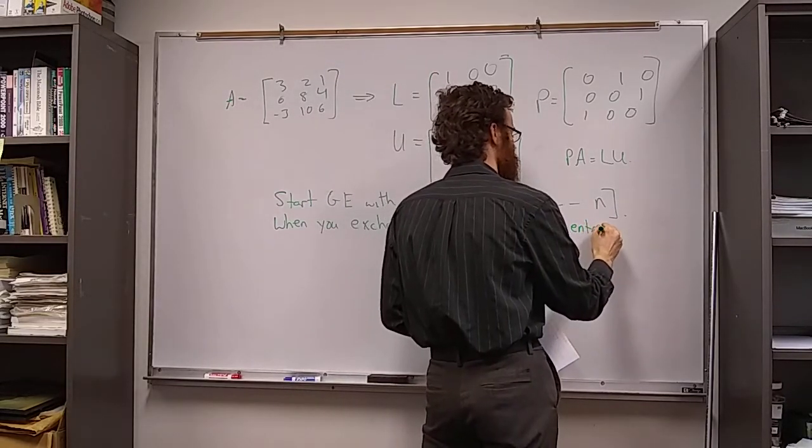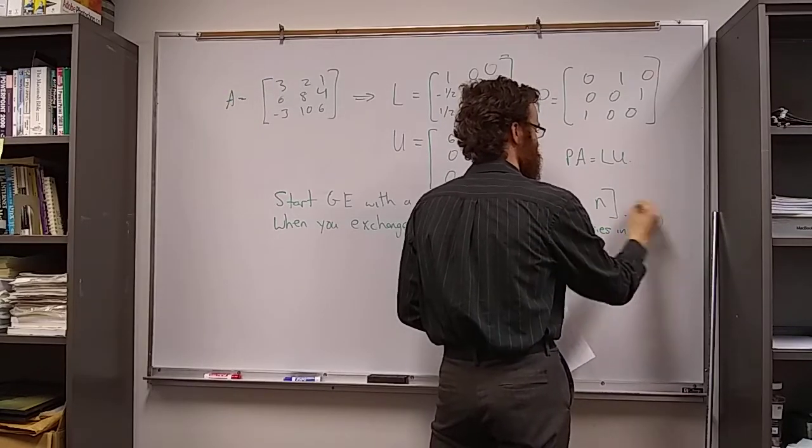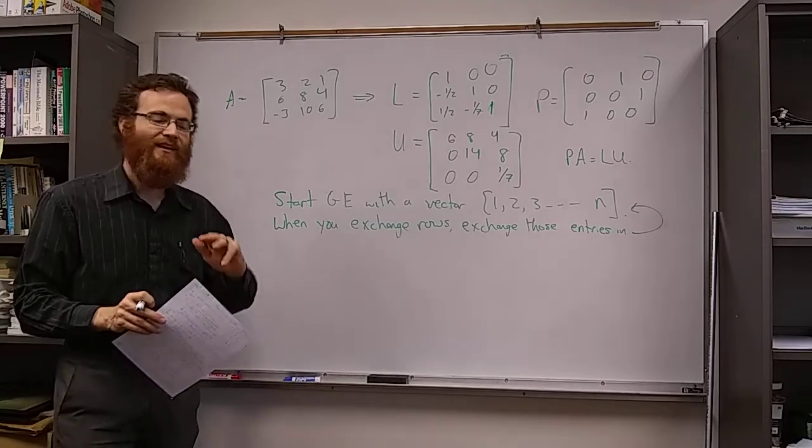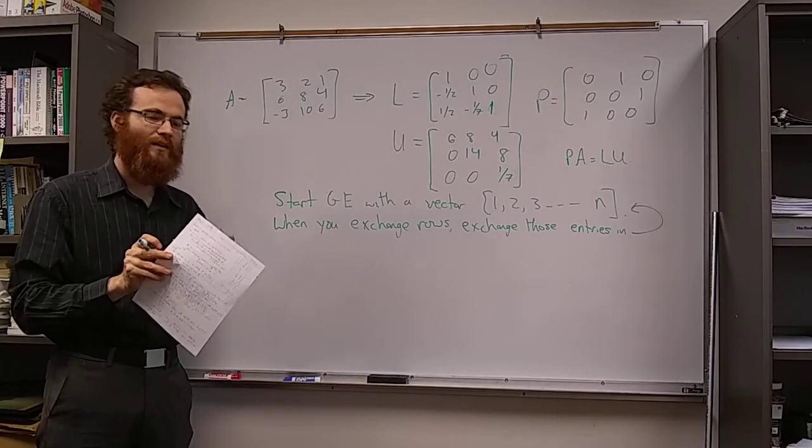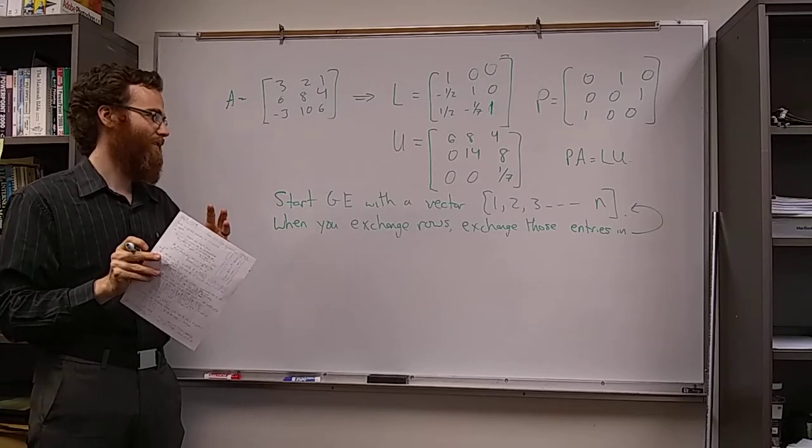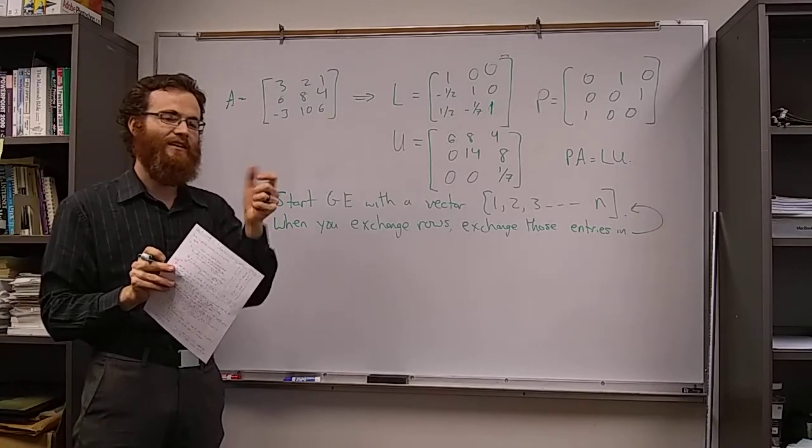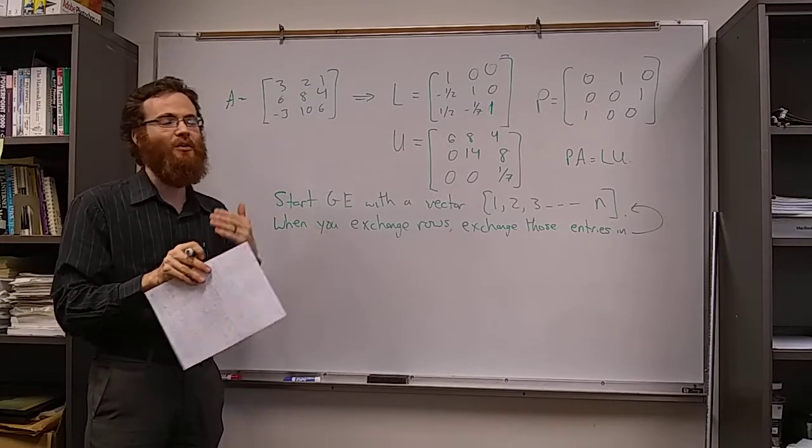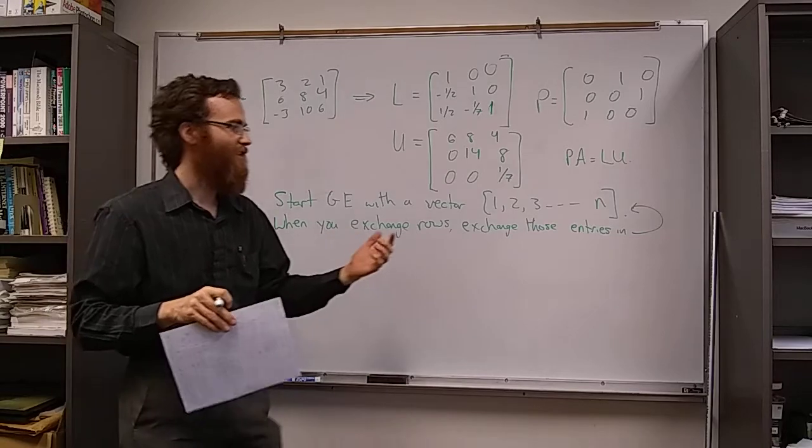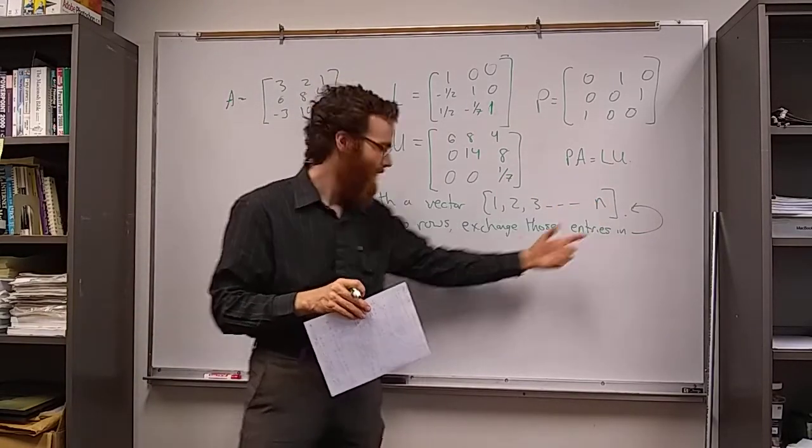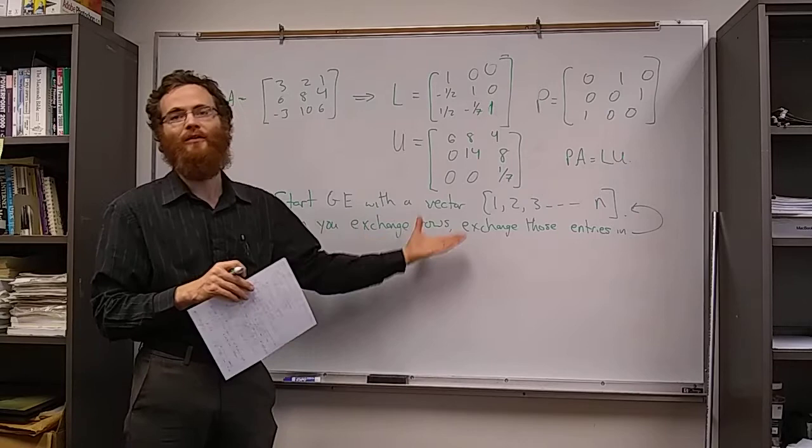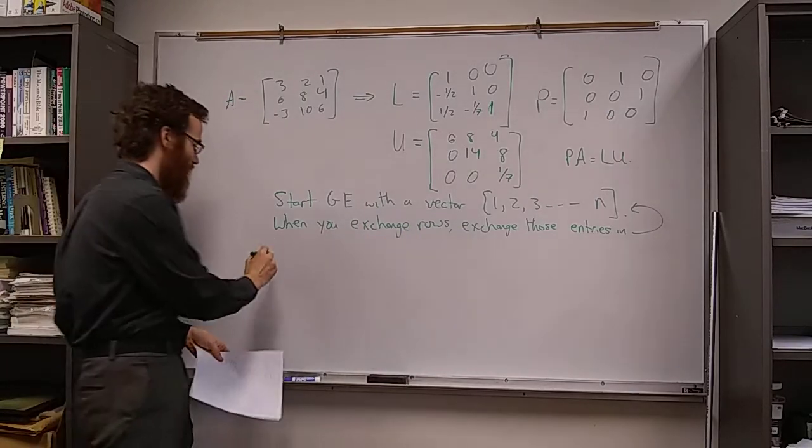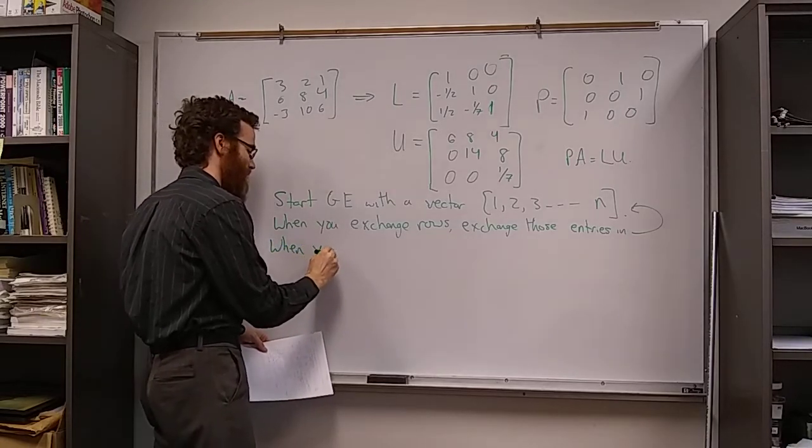in this vector. What I mean by exchanging the entries rather than the rows is that instead of changing the numbers—if you change the numbers, they might already be switched—you want to change, you know, the third entry with the fifth entry if you change the third row with the fifth row when you're doing Gaussian elimination.